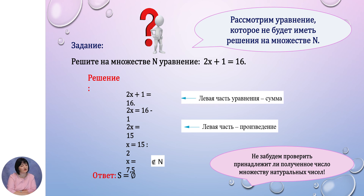Рассмотрим уравнение, которое не будет иметь решения на множестве натуральных чисел. Дано уравнение: 2x плюс 1 равно 16. Левая часть — сумма, поэтому 2x равно 16 минус 1, то есть 2x равно 15. Теперь левая часть — произведение: x равен 15 делить на 2, получается 7,5. Число 7,5 не является натуральным. Значит, на множестве натуральных чисел это уравнение решения не имеет. Записывается: S = ∅.